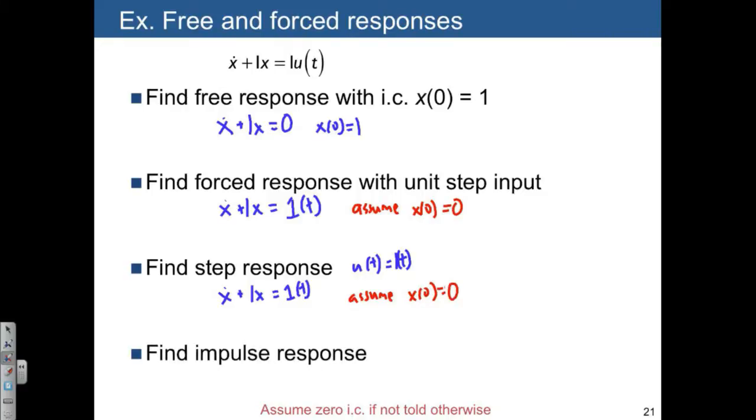Let's also find the impulse response, where again, we want to solve the equation where u of t is equal to delta of t. And as a result, we want to solve x dot plus one x is equal to delta of t.